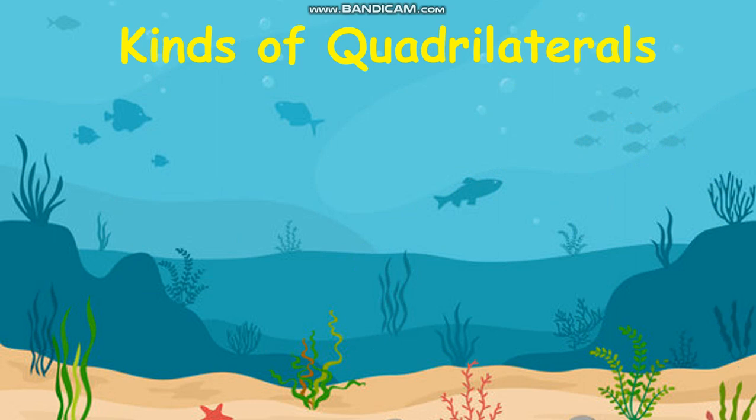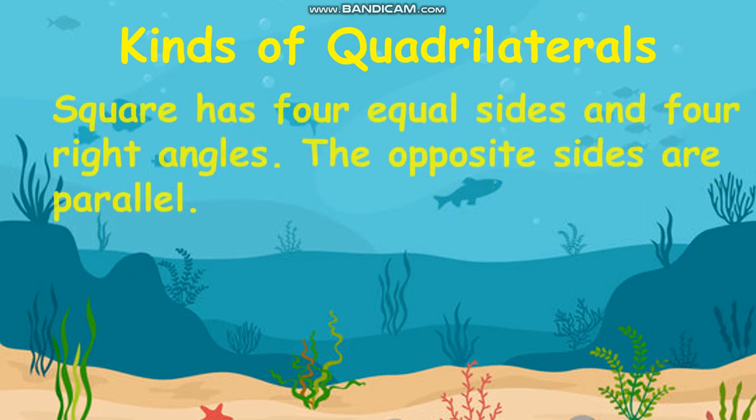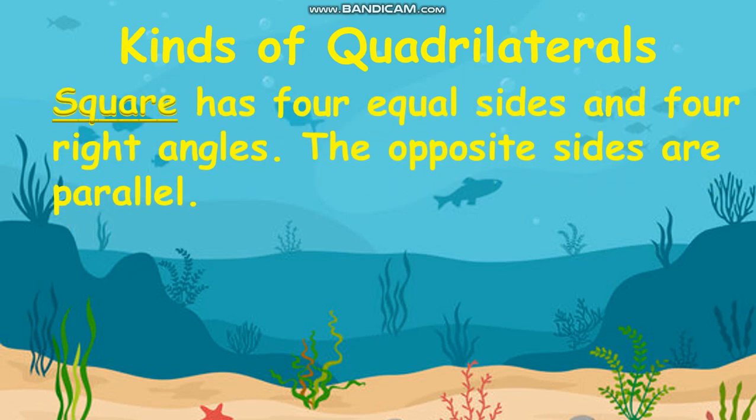What are the kinds of quadrilaterals? Let's start with the square. A square has four equal sides and four right angles. The opposite sides are parallel.